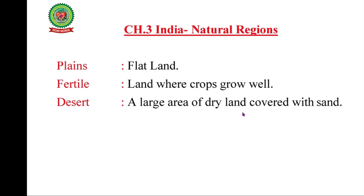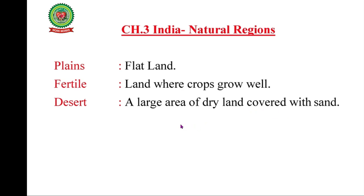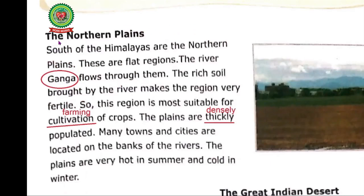Now let's start with the reading of page 11. The Northern Plains: South of the Himalayas are the Northern Plains. These are flat regions. The river Ganga flows through them. The rich soil brought up by the river makes the region very fertile, so this region is more suitable for cultivation of crops.